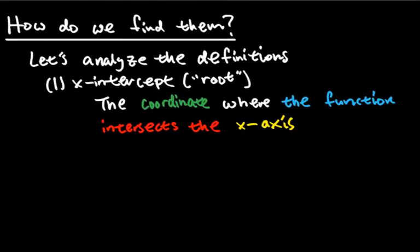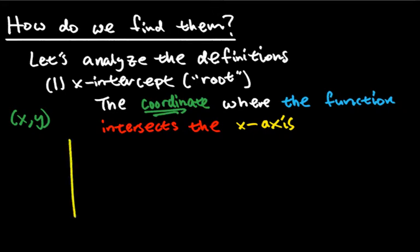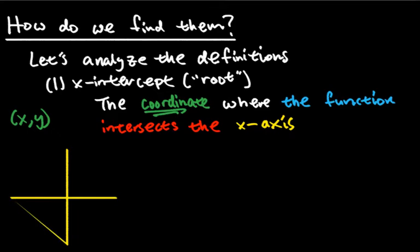Let's analyze these definitions — that will help us find out what they are and how to get them. A coordinate means you're going to have something in the form x-comma-y. Where the function intersects the x-axis: let's understand what the x-axis is. When you have a coordinate plane, you have x and y coordinates. The x-axis is a line.